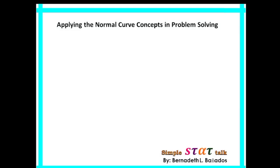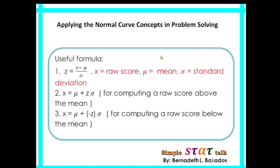In solving problems that deal with the concept of normal curve, it involves three important formulas. First, we have Z is equal to X minus μ divided by σ.